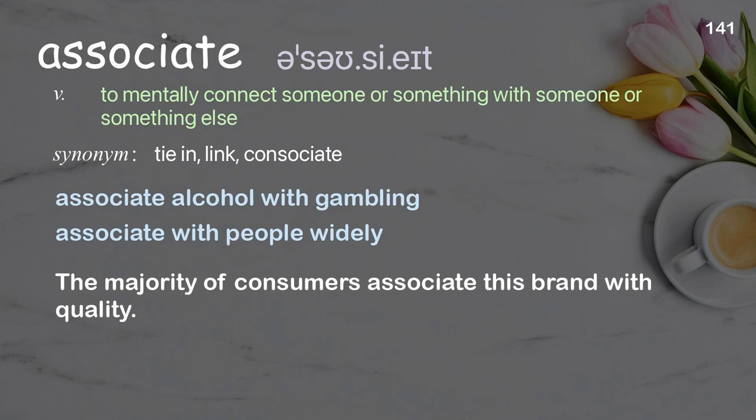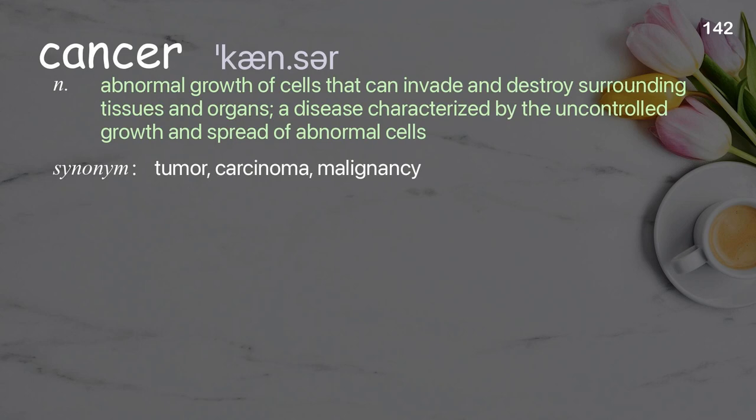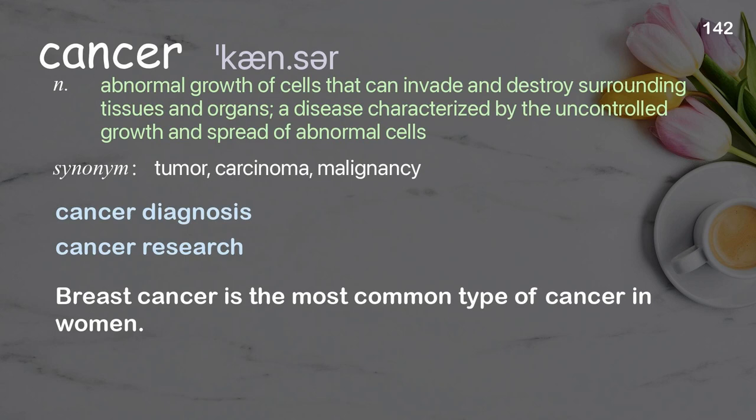Cancer: abnormal growth of cells that can invade and destroy surrounding tissues and organs; a disease characterized by the uncontrolled growth and spread of abnormal cells. Examples: cancer diagnosis, cancer research. Breast cancer is the most common type of cancer in women.